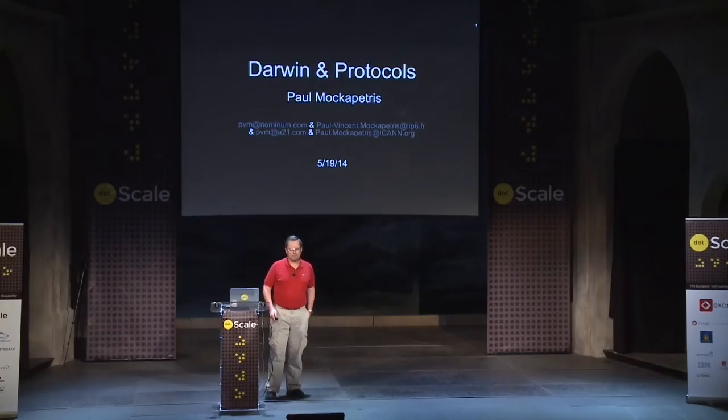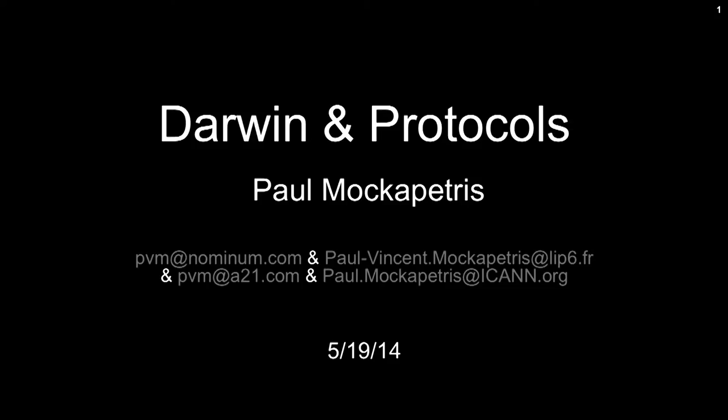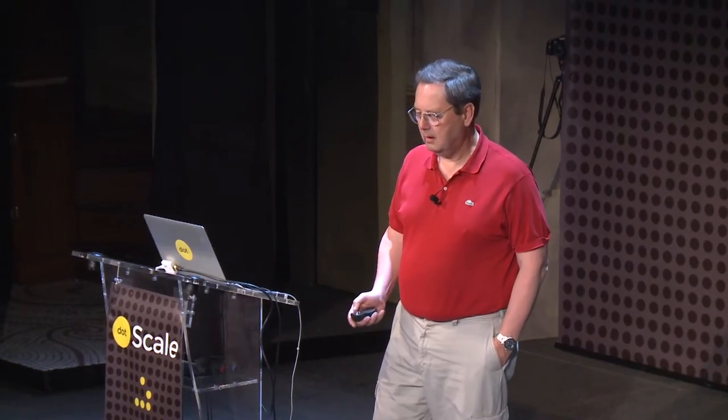Good afternoon. The talk today is about Darwin and protocols, and as you might expect, it's mostly about DNS. I put up this first slide just to show how much people like identifiers — those are four of my seven email addresses. I'm sure most of you have many. People want identifiers, and the DNS is the basis of providing most of the identifiers we use today on the Internet.